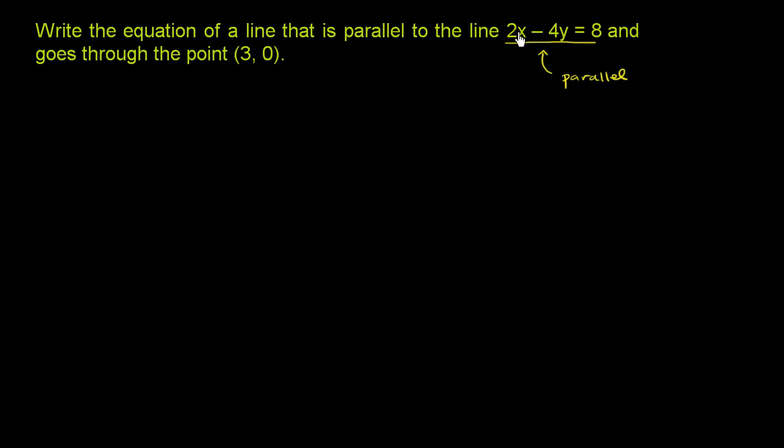So first, let's figure out what the slope of this line is. The easiest way to do that is to put this in slope y-intercept form. So we have 2x minus 4y equals 8. We want to solve for y. We want this to be in the form y equals mx plus b.